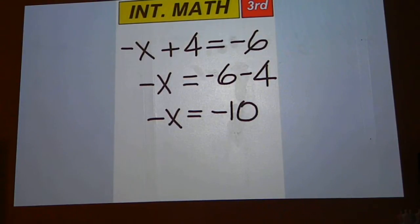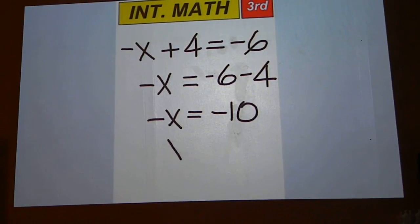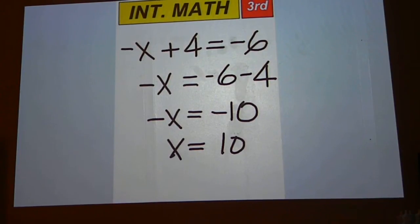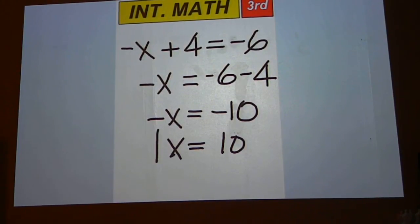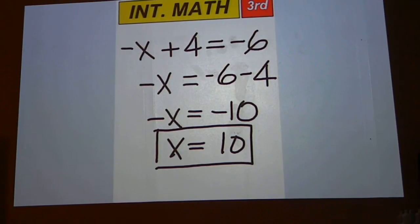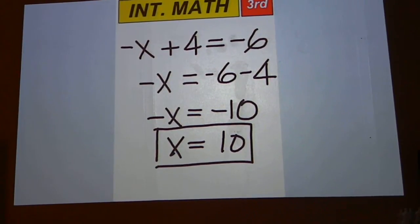Divide both sides by negative 1 to get rid of the negative sign on the x. And negative 1 into negative 10 gives you a positive 10.